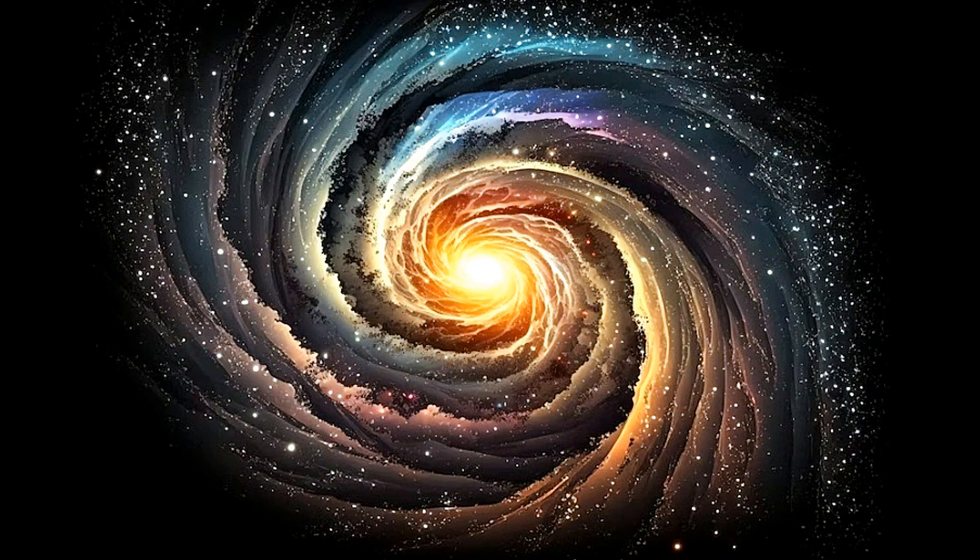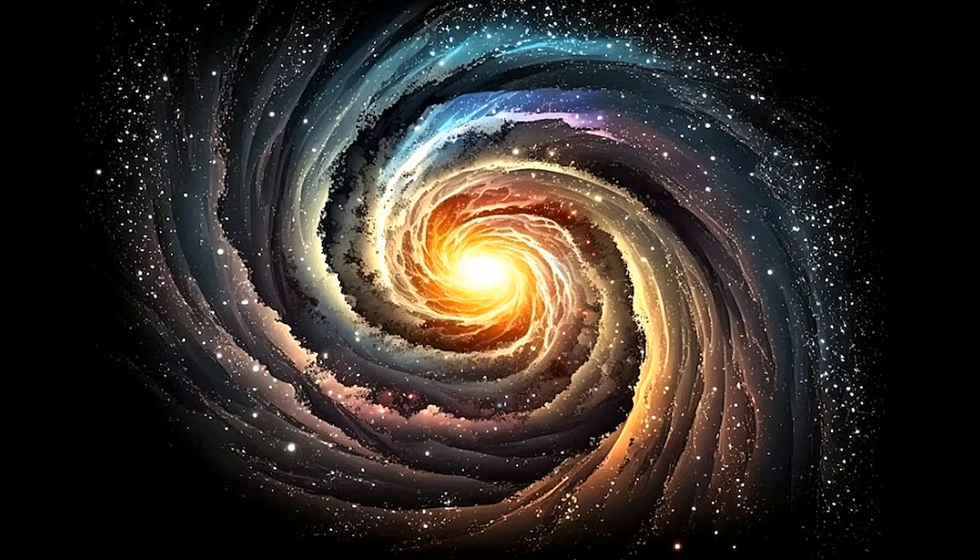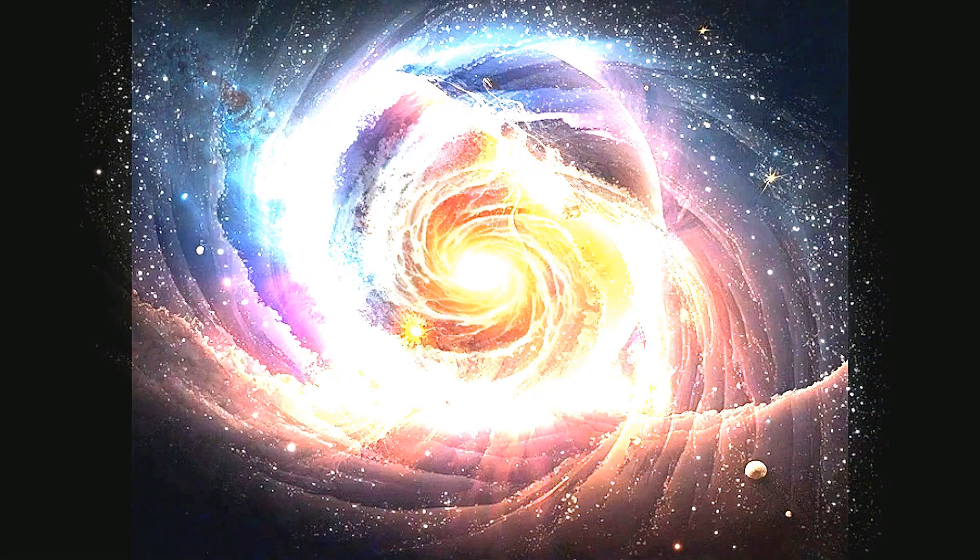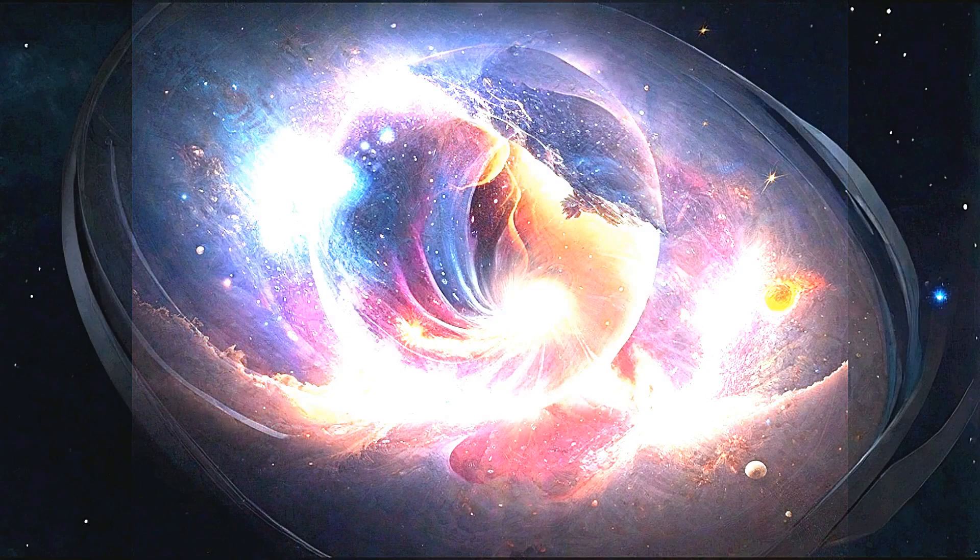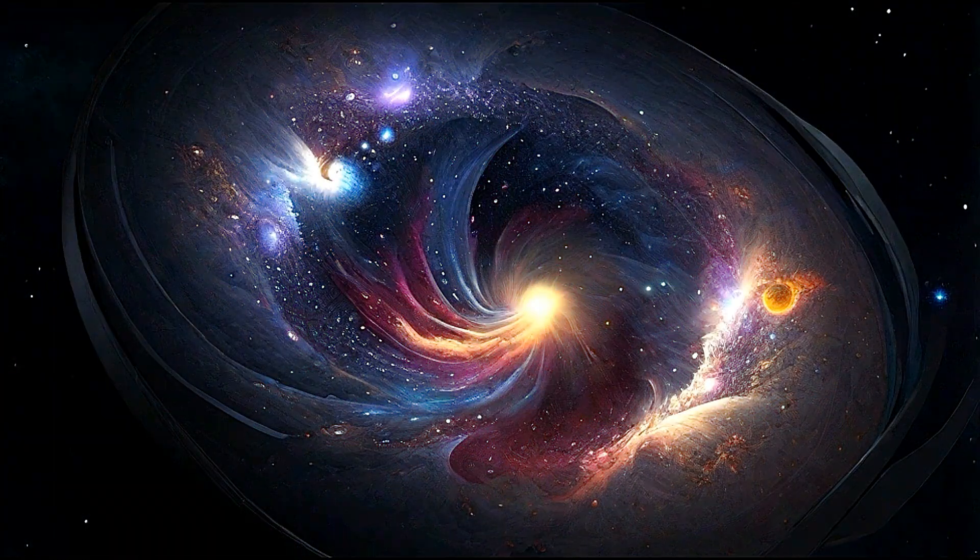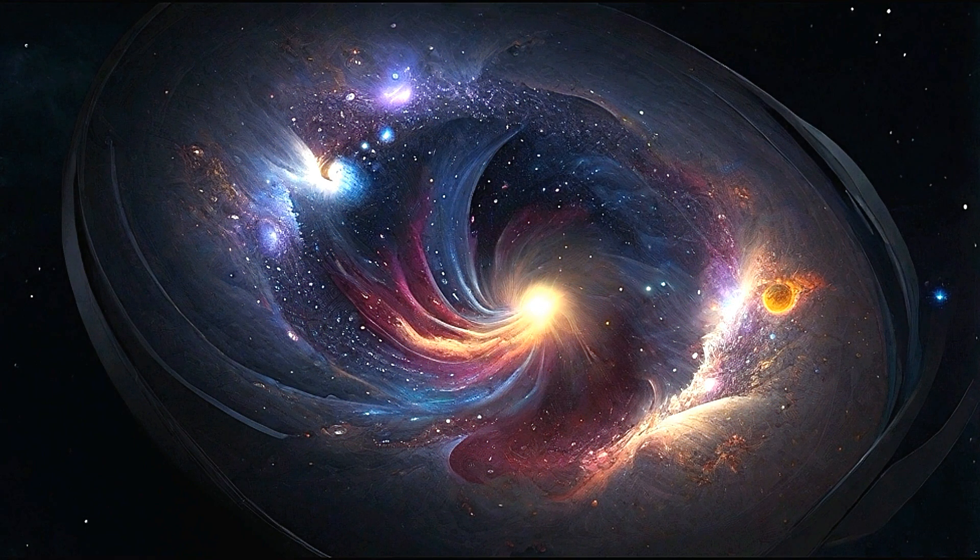Big Rip. This theory suggests that dark energy, which is causing the universe's expansion, could continue to increase in strength over time. If this happens, it could eventually lead to a point where galaxies, stars, planets, and even atoms are torn apart by the increasing force of dark energy, resulting in a cataclysmic event known as the Big Rip.